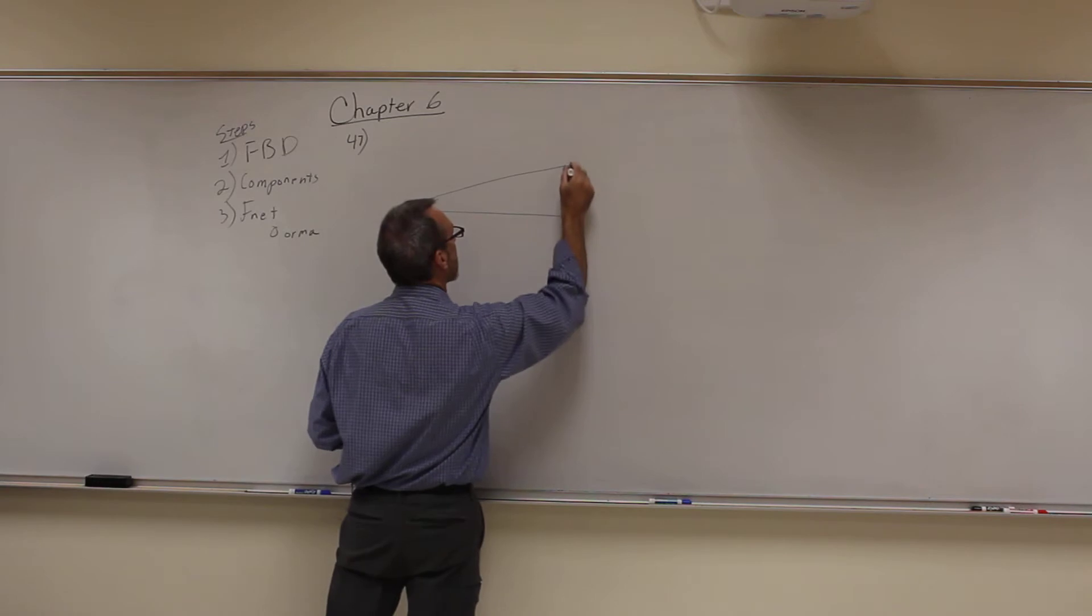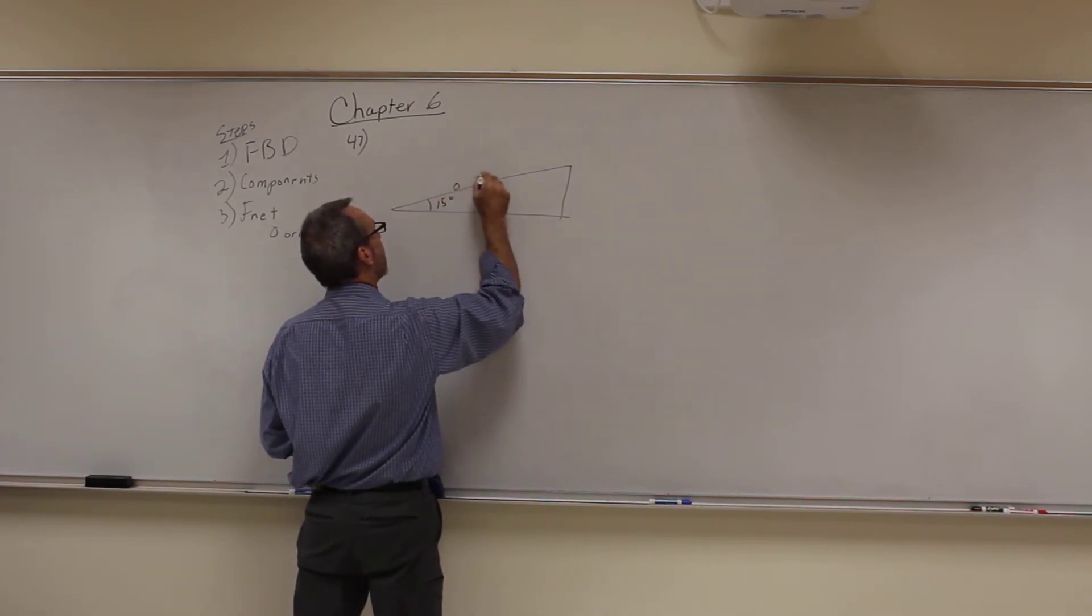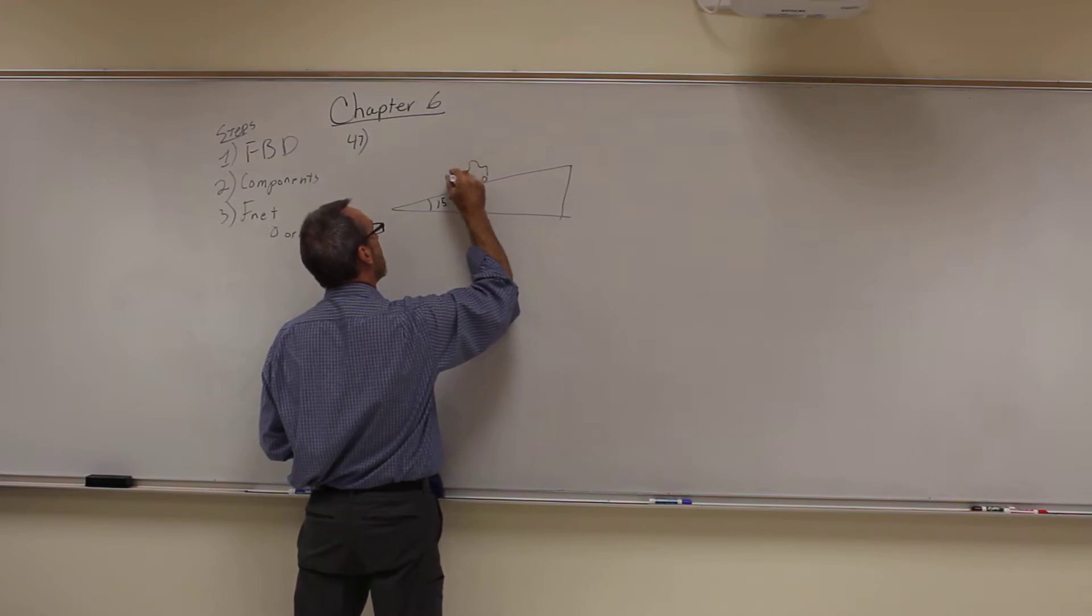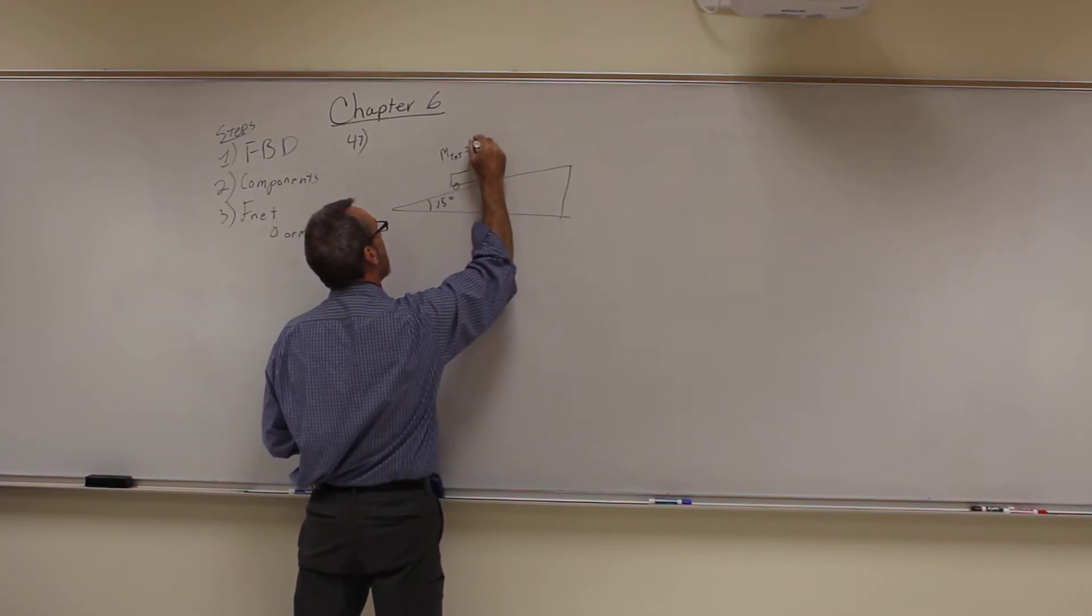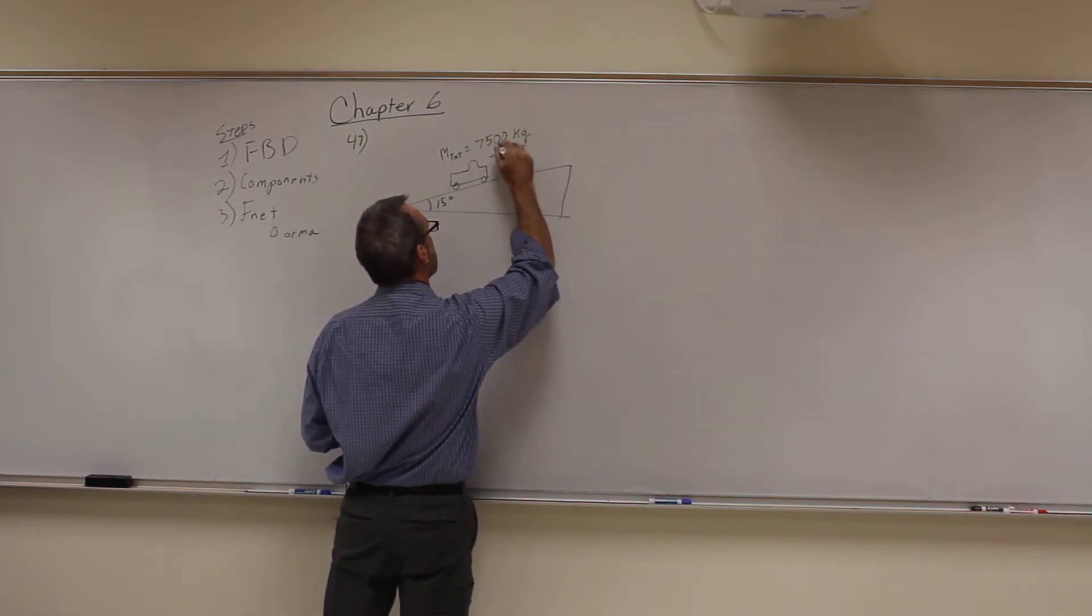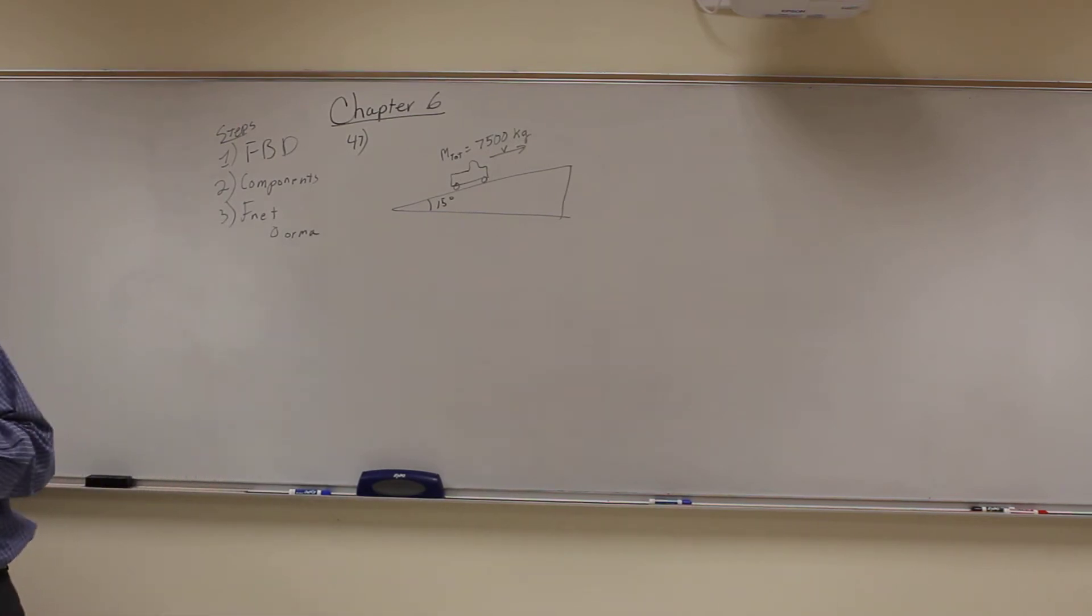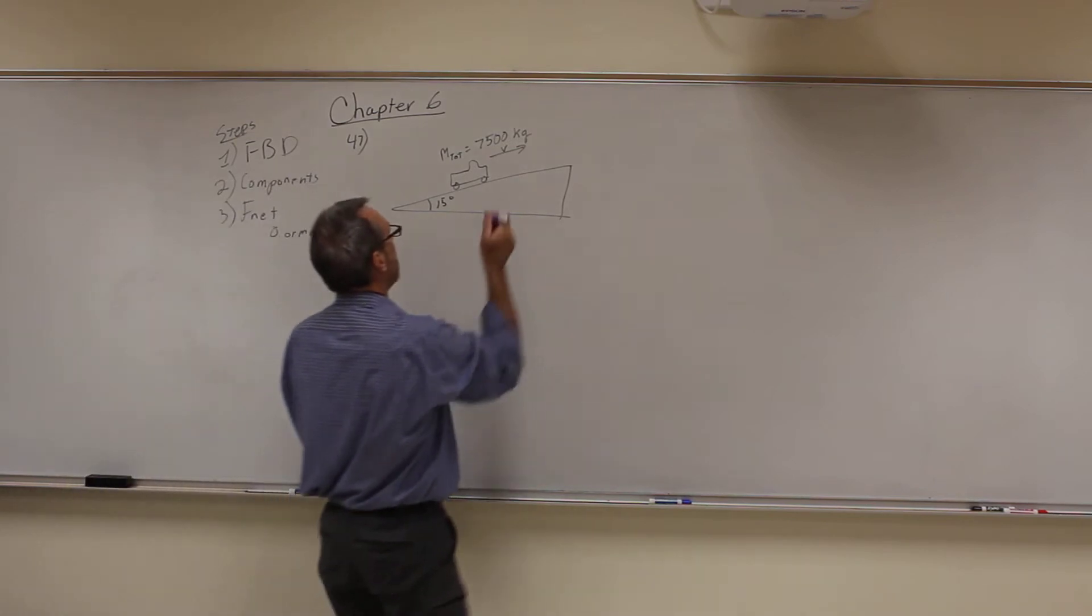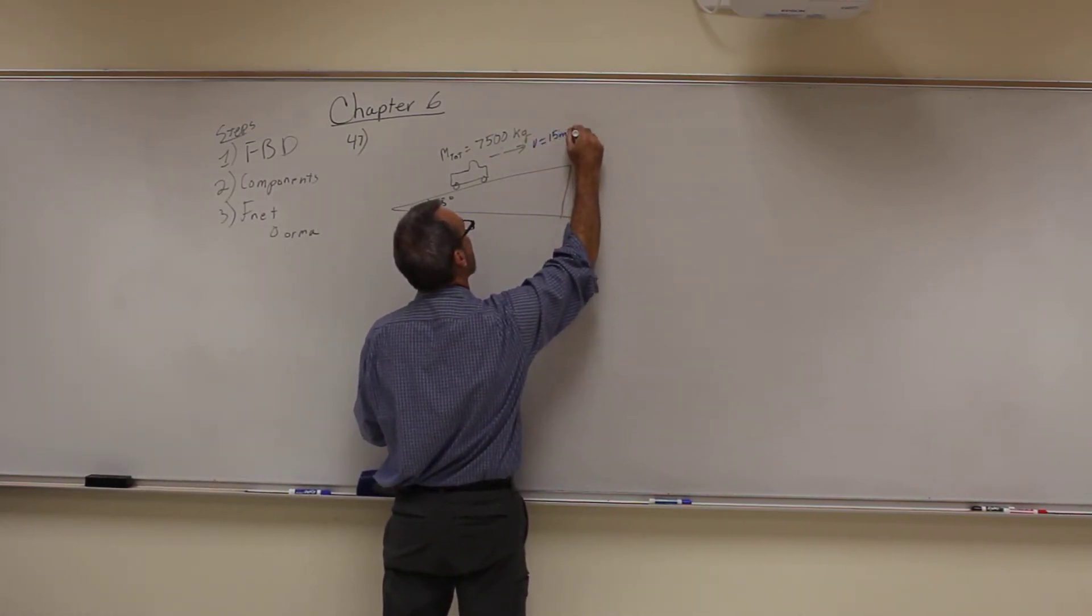So we have an inclined plane, 15 degrees. Here's the truck, and it has a total mass of 7,500 kilograms. And it's going at a constant velocity up the hill. In fact, we know the velocity is 15 meters per second.